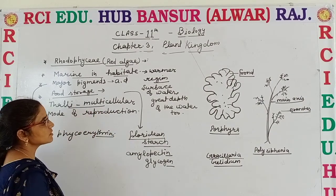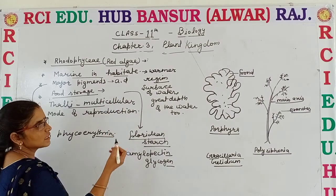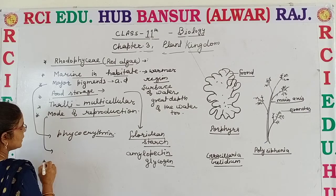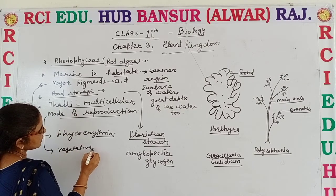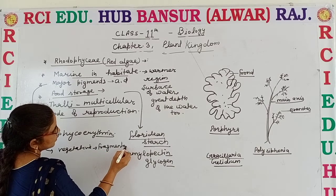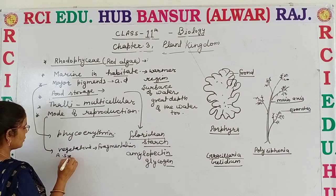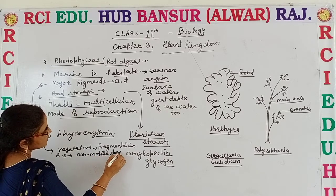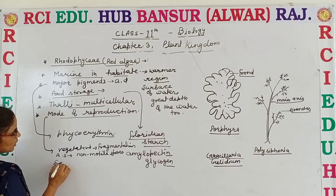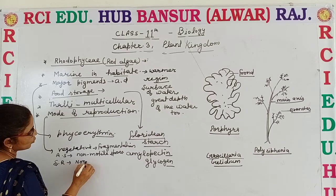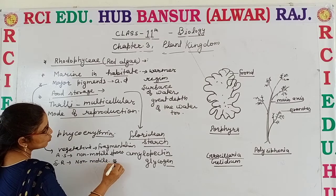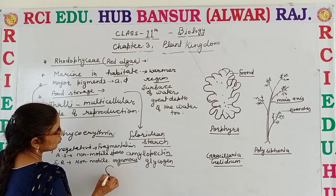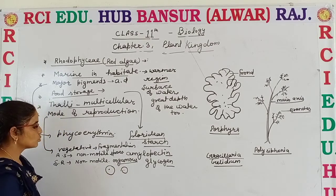The thalli are multicellular. It means the red algae are multicellular, and a few algae also show complex body organization. Regarding the mode of reproduction: vegetative reproduction takes place by fragmentation. Asexual reproduction takes place by non-motile spores. Sexual reproduction also takes place by non-motile gametes and it is oogamous type, meaning one is a non-motile gamete and another is a motile gamete.